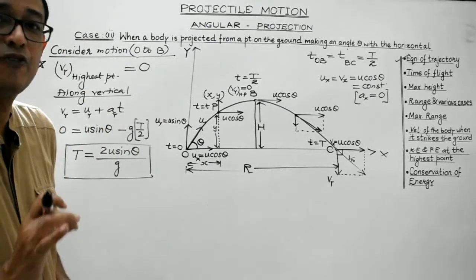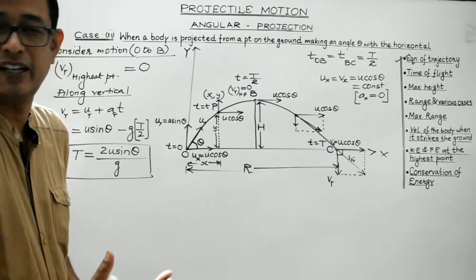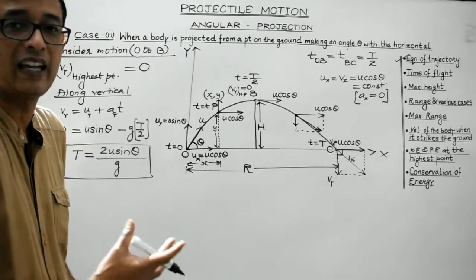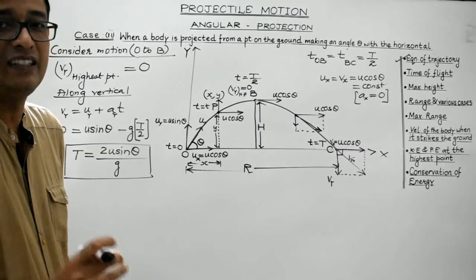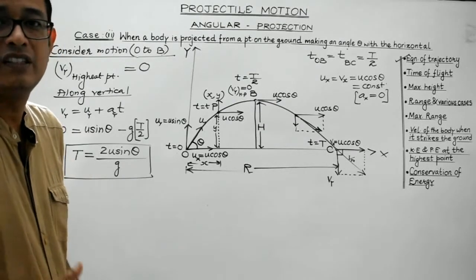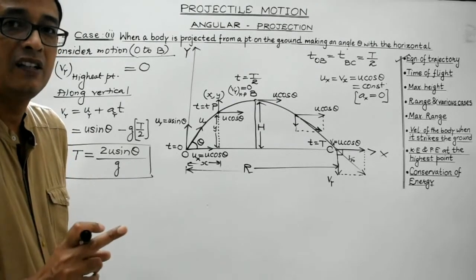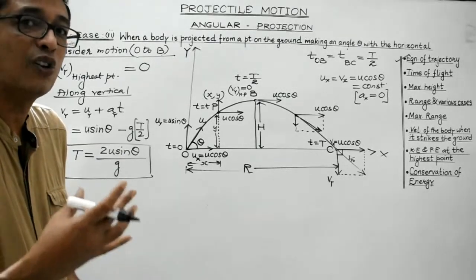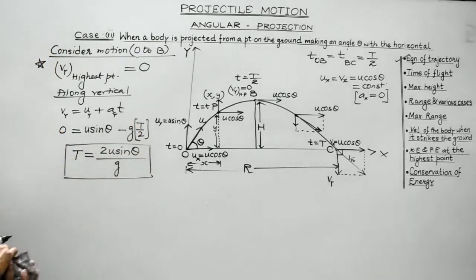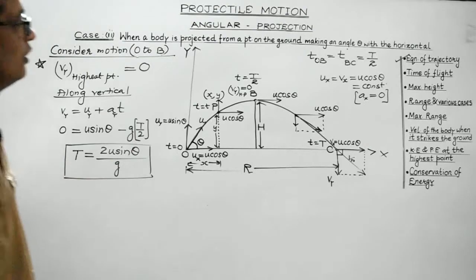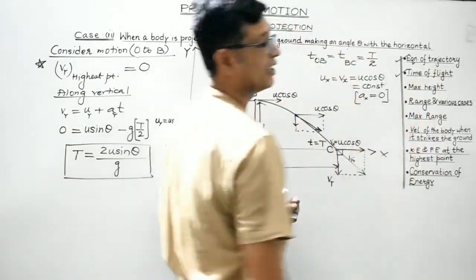The time of flight of a projectile during angular projection, when projected with velocity u at angle theta with the horizontal, is T = 2u sinθ/g. Theta is the angle which the direction of motion of the projectile makes with the horizontal.